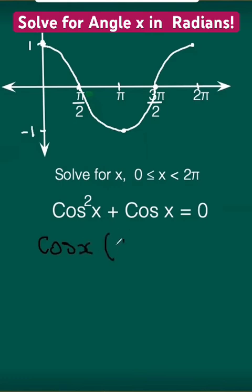And once we factor out cos x, we're going to get cos x plus 1 equals 0, which indicates that either cos x equals 0 from here, or cos x plus 1 equals 0, and therefore cos x would equal negative 1 to make this 0.